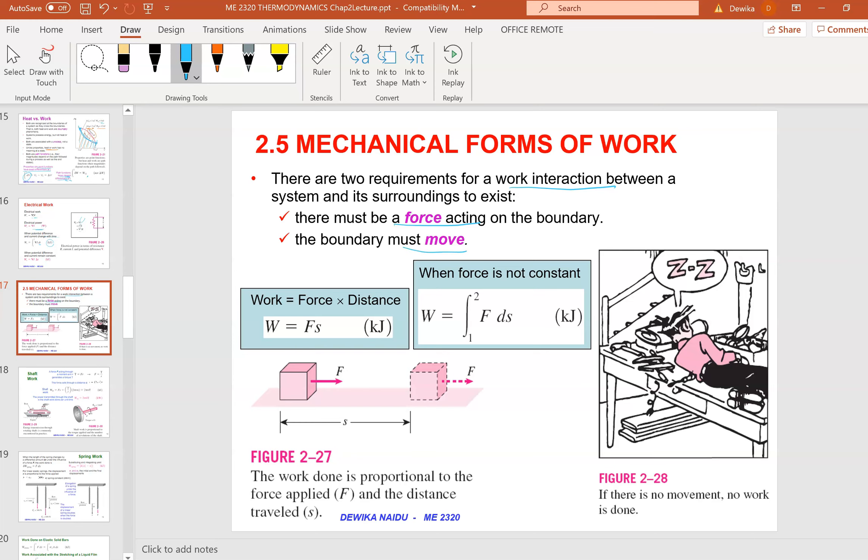The first work is force times distance, where you have a box moving and the distance must be parallel. Remember, we have work equals force times distance - there are two types: one is parallel, one is perpendicular.